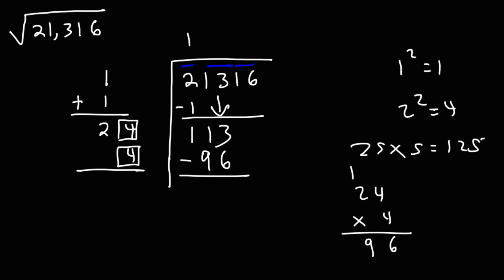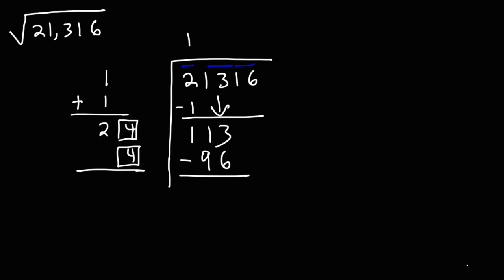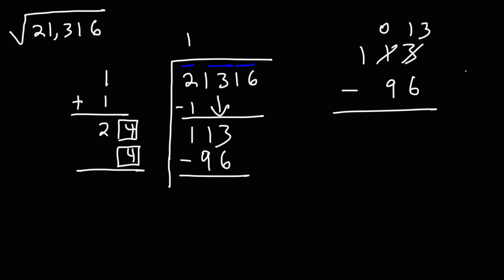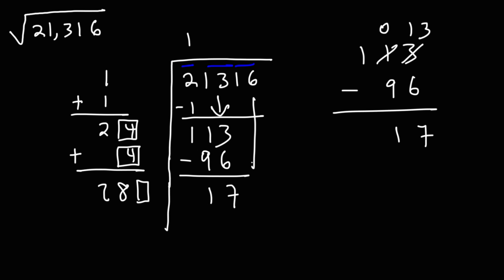Now we subtract: 113 minus 96. We can't do 3 minus 6, so we borrow a 1 — the 1 becomes 0 and the 3 becomes 13. 13 minus 6 is 7; 10 minus 9 is 1. So we get 17. Now 24 and 4 add to give 28, and we create a new box. We also bring down the 16, giving us 1716.